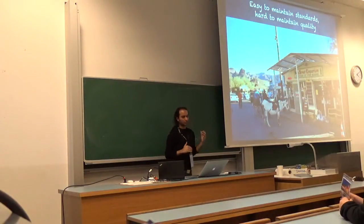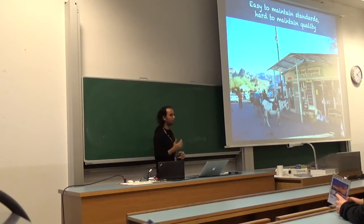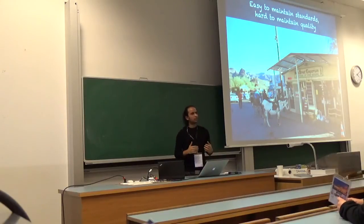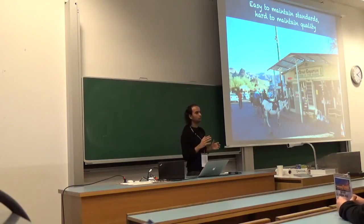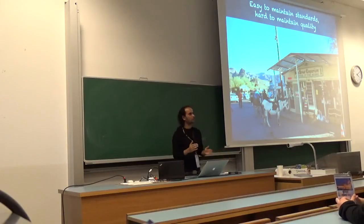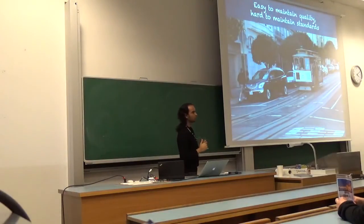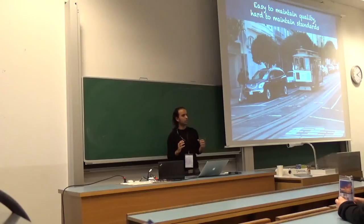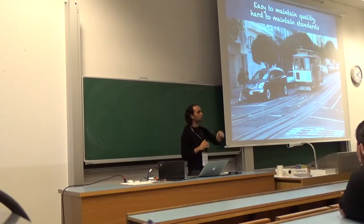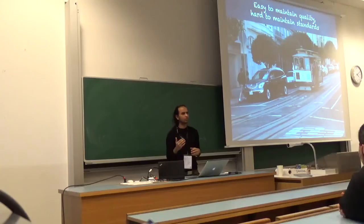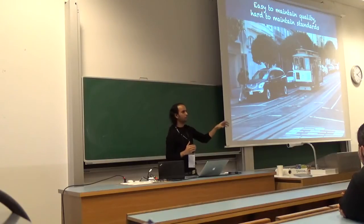In terms of standards, it's easy to maintain standards in monolithic because we have one big application. But it's hard to maintain code quality because there is too much code in one application — it's hard to have a clean wall separating the good and the ugly. In microservices, each team is responsible for a particular microservice, so it's easier to maintain quality, but harder to maintain standards across a large number of small teams. It's not impossible, but it requires additional work.